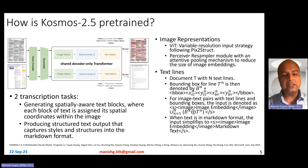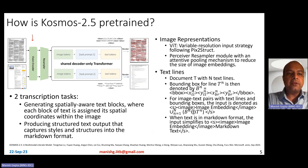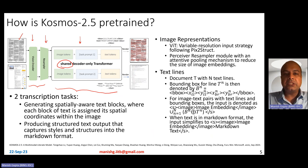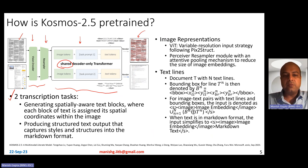So how is Cosmos 2.5 pre-trained? Cosmos 2.5 is a very simple model — it actually contains a vision encoder followed by a perceiver resampler model. It can take any documents as input. The encoder part is a vision encoder and a resampler, and the decoder part is essentially a shared decoder-only transformer, shared across two different transcription tasks. One of the tasks is to generate spatially aware text blocks, where each block of text is assigned its spatial coordinates or the rectangle within the image.